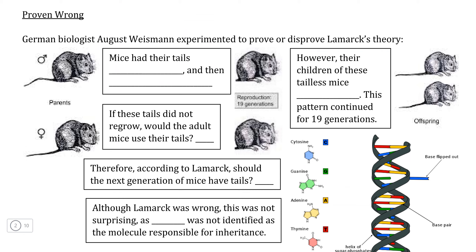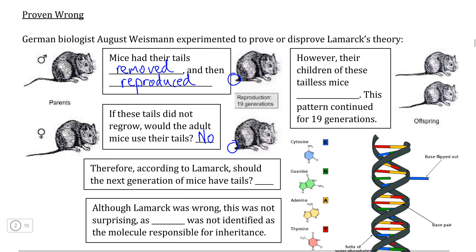This was proven wrong by another biologist by the name of August Weissmann, who did a rather simple example involving mice. What Weissmann did is he actually took a pair of experimental mice and surgically removed their tails. According to Lamarckian evolution, when these mice without tails were allowed to reproduce, the offspring would not be born with tails — because if the mouse doesn't have a tail, it can't use it and therefore cannot grow or strengthen it in order to pass it on. However, even though the two parents clearly did not have tails, the offspring of these mice clearly did have tails.